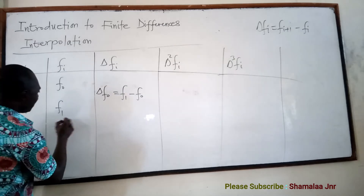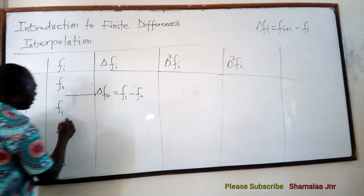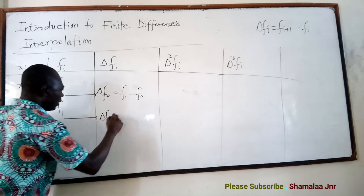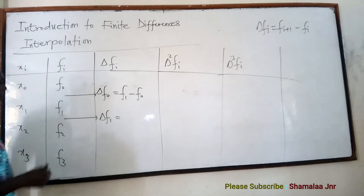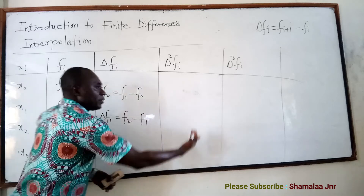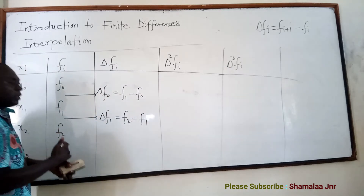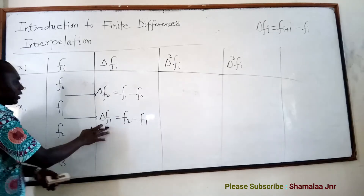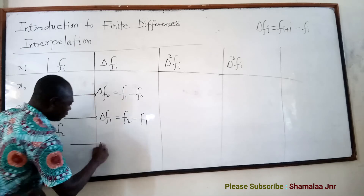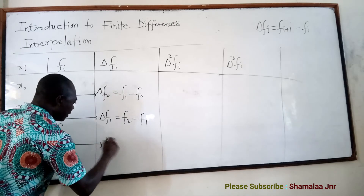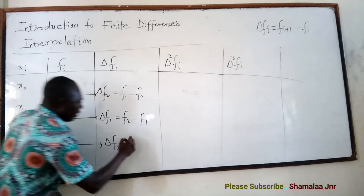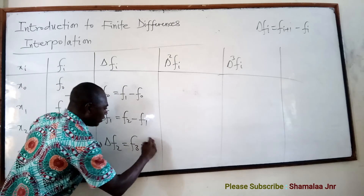Moving to the next entries: delta F1 equals F2 minus F1, and you write it at the middle row between those two values. Then delta F2 equals F3 minus F2, written at the middle between those rows.